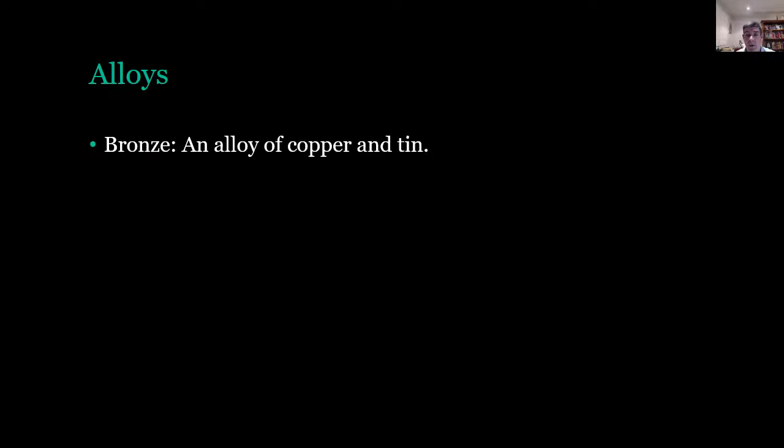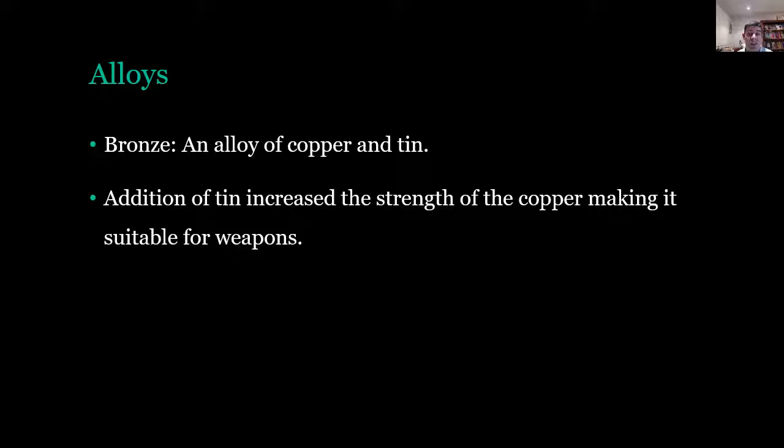Now when we're looking for a breakdown of alloys there's a couple that are worth having a look at and I'm just going to very briefly touch on each of these in this particular video. So bronze, from the Bronze Age, is an alloy of copper and tin. A little bit of tin into the copper structure increased the strength of the copper and this made it very suitable for the production of weapons.